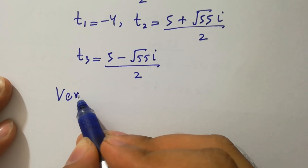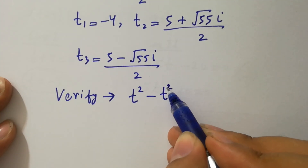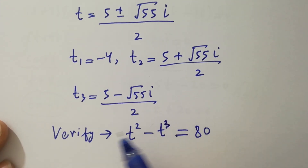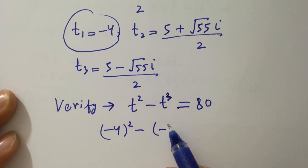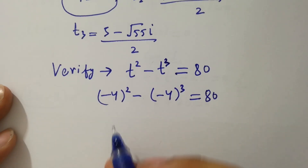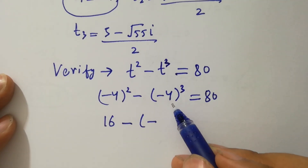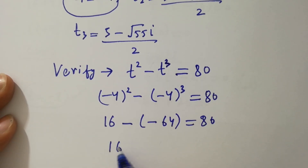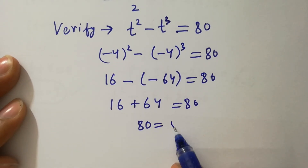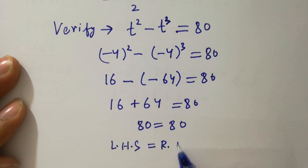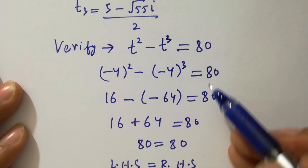In the next step, I am going to verify. We check t squared minus t cubed equals 80 by putting t equals negative 4. We get negative 4 squared minus negative 4 cubed equals 80. Since the exponent 2 is even, minus 4 squared gives plus 16. Since 3 is odd, negative 4 cubed gives negative 64, so 16 minus negative 64 gives 16 plus 64 equals 80. Left-hand side equals right-hand side, which confirms t equals negative 4 satisfies the equation.